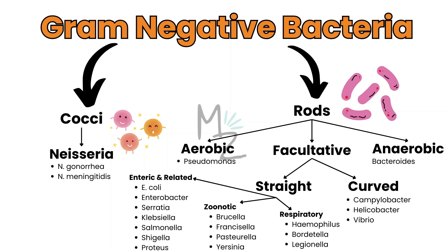Rods are further subdivided into aerobic like Pseudomonas, facultative, and anaerobic like Bacteroides. Facultative are further subdivided into curved like Campylobacter, Helicobacter, and Vibrio. And also into straight ones. Straight are further subdivided into enteric-related, which include E. coli, Enterobacter, Serratia, Klebsiella, Salmonella, Shigella, and Proteus. Also into zoonotic, which includes Brucella, Francisella, Pasteurella, and Yersinia. And into respiratory, which includes Haemophilus, Bordetella, and Legionella.